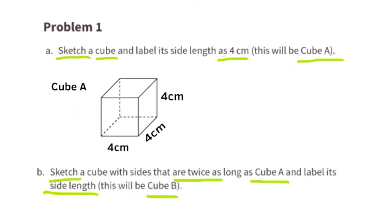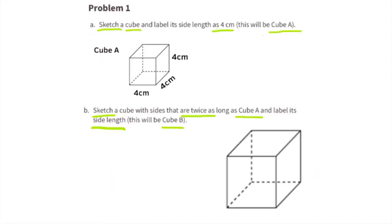Part B. Sketch a cube with sides that are twice as long as cube A, and label its side length. This will be cube B. The side lengths for this cube need to be twice as long as the side lengths for cube A. Since cube A has side lengths of 4 centimeters, this cube needs side lengths of 8 centimeters. Label the side lengths 8 centimeters and label the cube cube B.